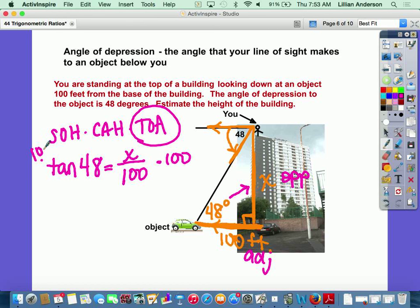Multiply both sides by 100, and so 100 times the tangent of 48 equals x. I go to my calculator, I type it in, and I find out that my building is about 111.1 feet.